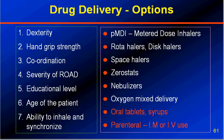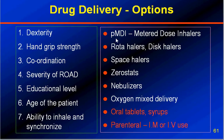Which drug delivery option should I choose — MDI, disc inhaler, or spacers? This depends on the dexterity of the patient, how good their coordination is, their hand grip strength, the severity of the disease, the educational level of the patient, the age of the patient, and the ability to inhale and synchronize with the MDI. Options include pressurized metered-dose inhalers, rota inhalers, disc inhalers, spacer inhalers, gerostats, nebulizers, and mixed oxygen delivery. Oral tablets and syrups should be discouraged. Parenteral IM and IV use should be avoided.